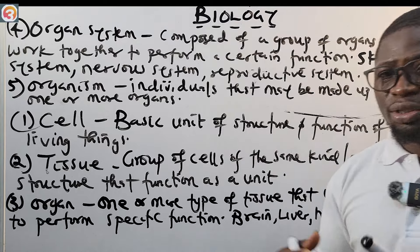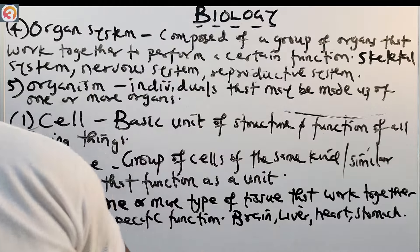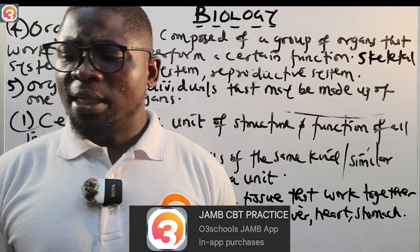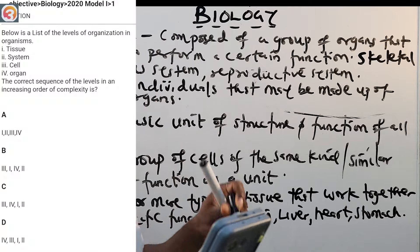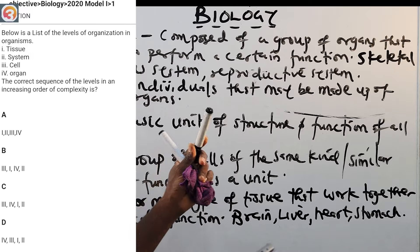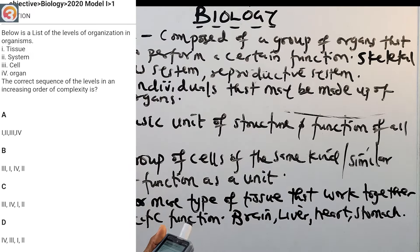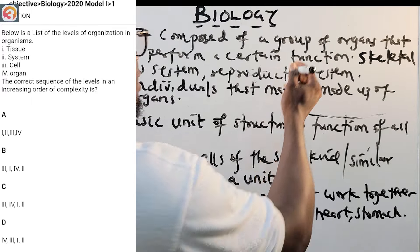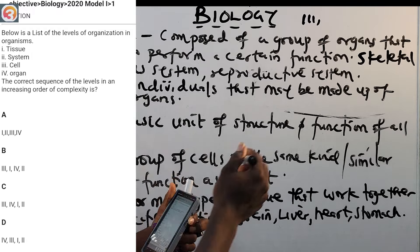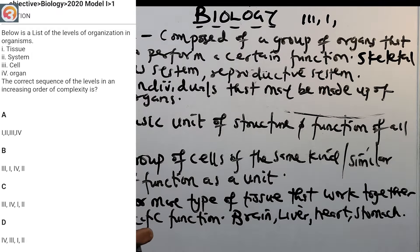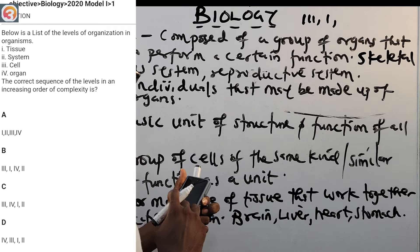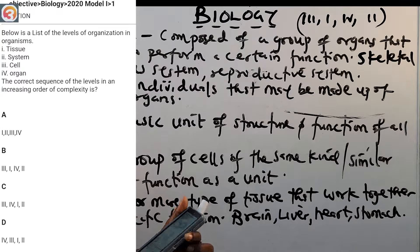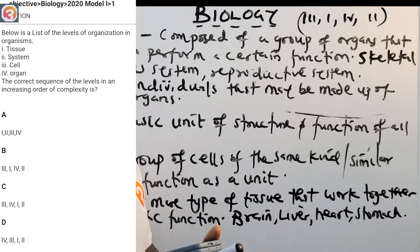Now let's go to the past questions. The 2020 question one asks for the correct sequence of levels of organization in increasing order. The smallest is the cell — option three. After cell comes tissue — option one. After tissue comes organ — option four. Then comes the organ system — option two. The correct sequence fits with option B.